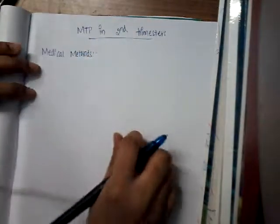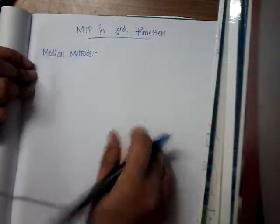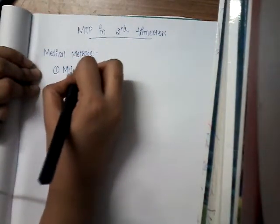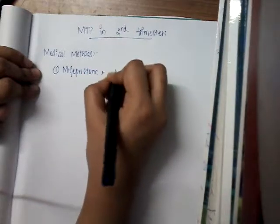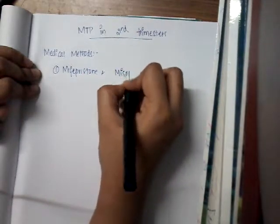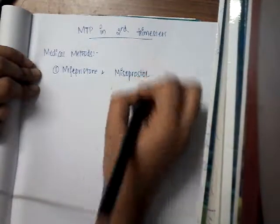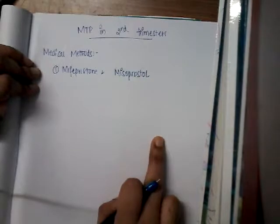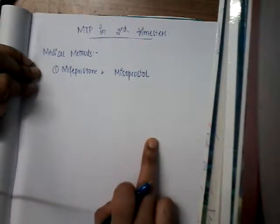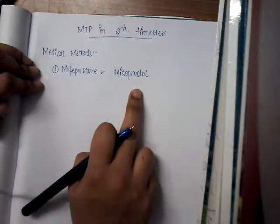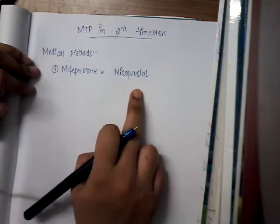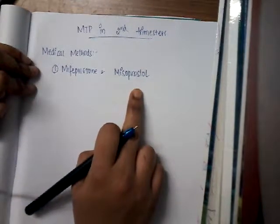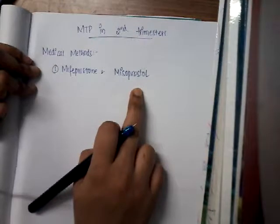The first medical method used in second trimester MTP is mifepristone and misoprostol. Mifepristone is an anti-progestin — it softens the cervix and causes decidual degeneration, thus causing abortion. Misoprostol is a PGE1 analog, a prostaglandin, which activates uterine contractions and helps in abortion.